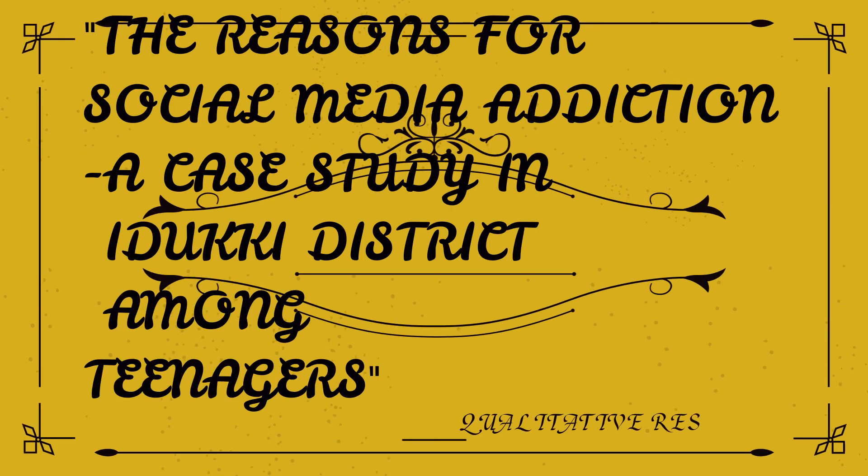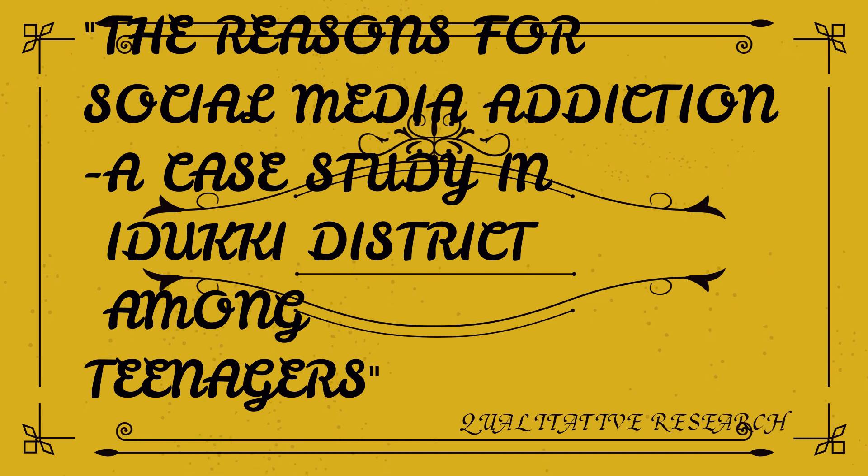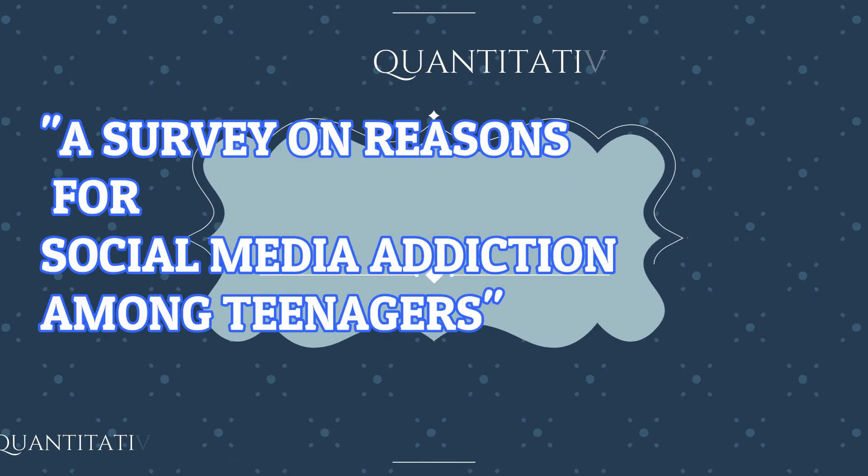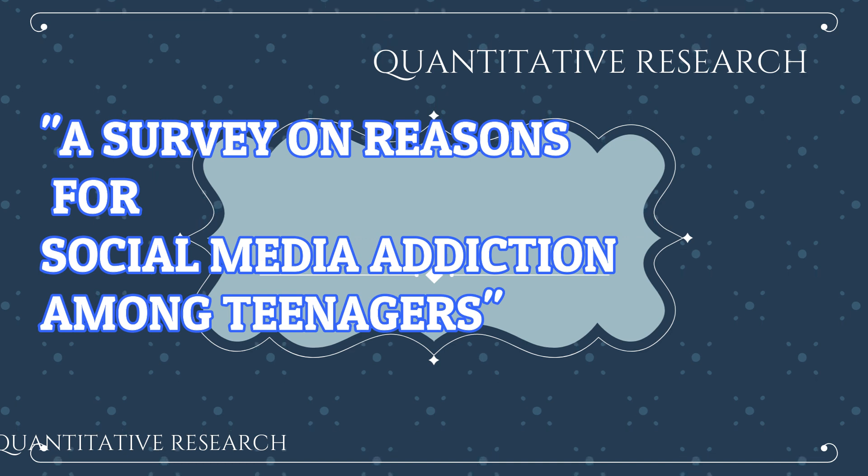On the basis of process, there are two types of research: qualitative and quantitative. For qualitative research, the title can be: 'The reasons for social media addiction — a case study in Iriki district among teenagers.' This title can also serve as an example for descriptive research, since both share similar characteristics. For quantitative research, which is fundamental and based on scientific method using statistics and analysis, the title can be: 'A survey on reasons for social media addiction among teenagers in Iriki district.'